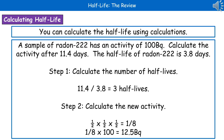We know that the activity is going to reduce by half for each half-life. So a half times a half times a half gives us one eighth. And then we can do one eighth times our 100, which gives us our final activity of 12.5 Becquerels.